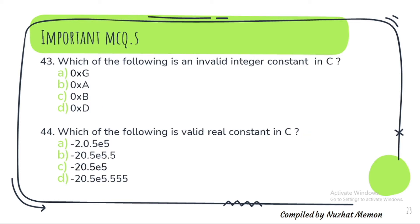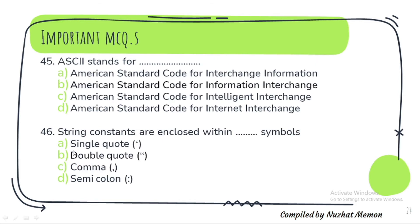Question 43: Which of the following is an invalid integer constant in C? The correct option is A. Question 44: Which of the following is a valid real constant in C? The correct option is C. Question 45: ASCII stands for — American Standard Code for Information Interchange. Question 46: String constants are enclosed within the double quotes symbol.